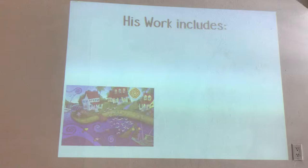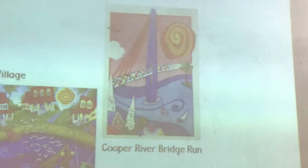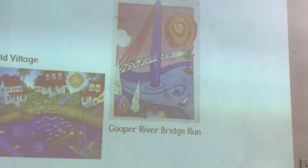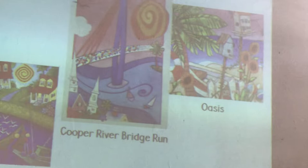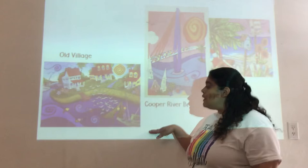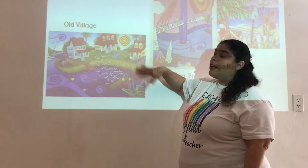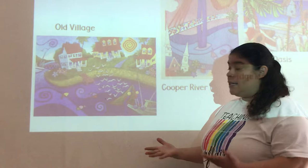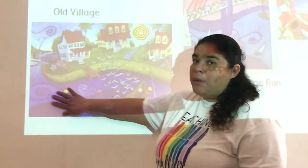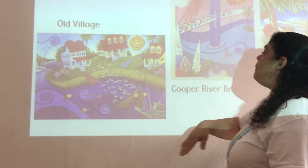His work includes this picture called The Old Village. He also has this one, which is the Cooper River Bridge Run. And this last one is called Oasis. If you look at his pictures, you can see just like we did in the one-point perspective — your objects in the very front are always going to be bigger. The further away the objects are, they become smaller and smaller. So your foreground will always be bigger than the objects on your middle ground, and then your background will be smaller.